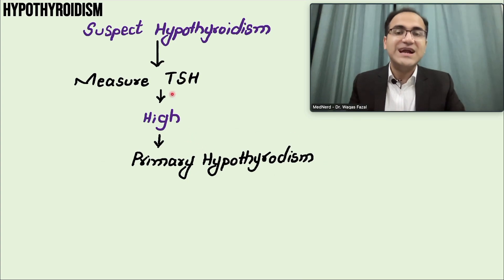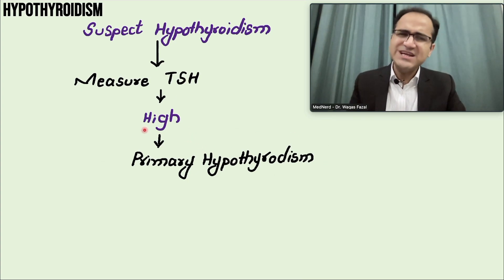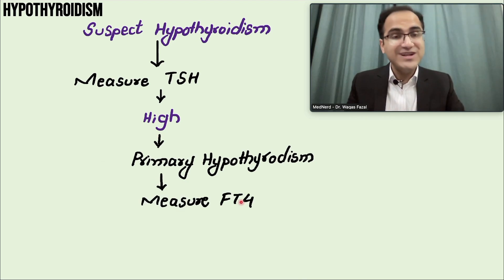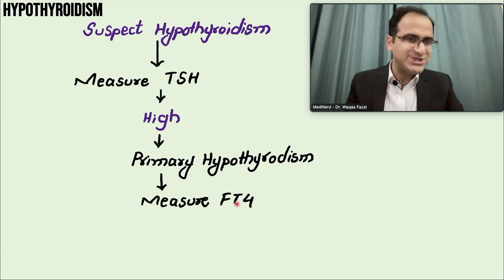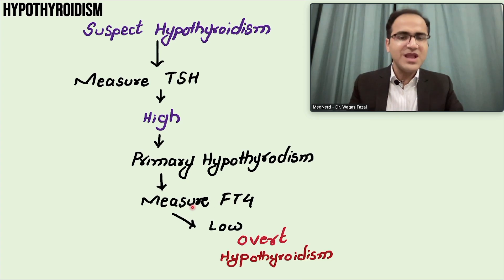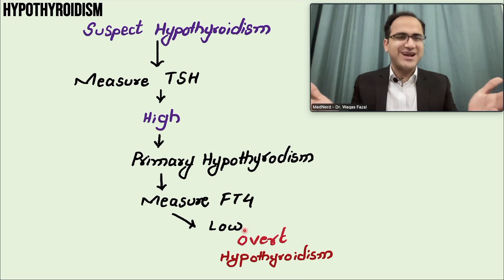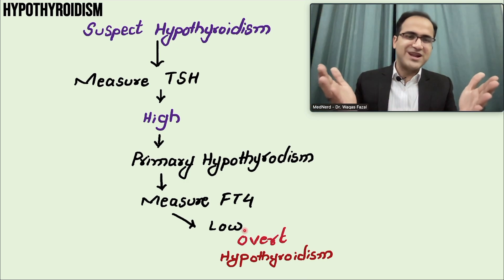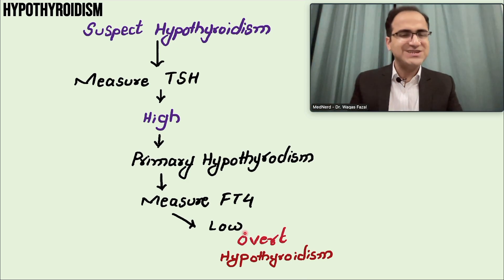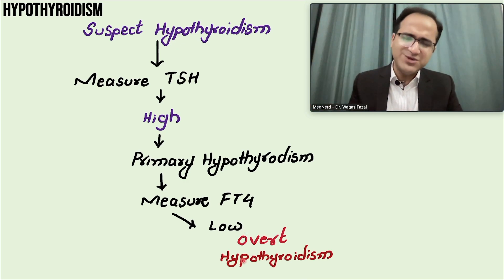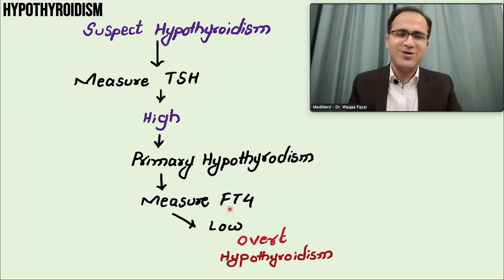TSH levels will be high. The next thing you have to do in these patients is to check the levels of free T4. If the free T4 levels are low, it confirms the diagnosis of primary hypothyroidism — that the patient is having overt hypothyroidism. The patient is hypothyroid because the TSH is high and the T4 is low. That is a classical hypothyroid patient.